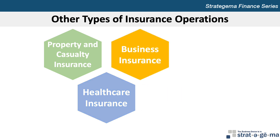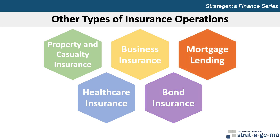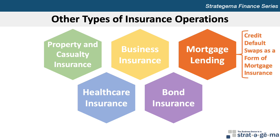Insurance companies provide a wide variety of insurance policies that protect businesses from many types of risk. Some forms of business insurance overlap with property and casualty insurance. Bond insurance protects investors that purchase bonds from the risk that the bond issuers will default on their bonds. Mortgage insurance protects the lender that provides the mortgage loans in the event that homeowners can't cover their payments and default on their mortgages. Some insurance companies provide insurance on mortgages by taking positions in credit default swaps, which are privately negotiated contracts that protect investors against the risk of default on particular debt securities.